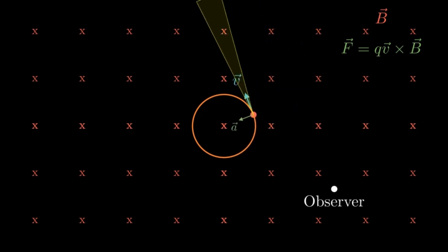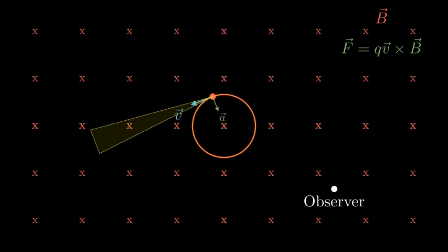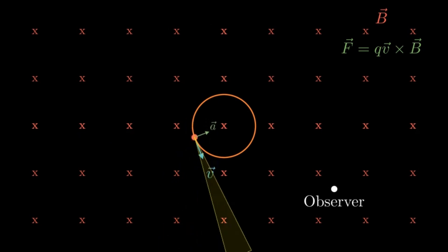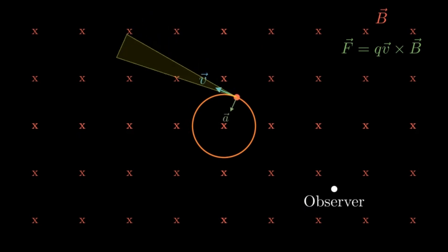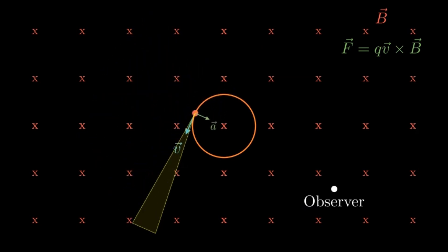If we were to consider what an external observer would record, we notice that the beam is not visible at all times. This has effects in the intensity and frequency of observed light, whose complex physics is beyond the scope of this video.